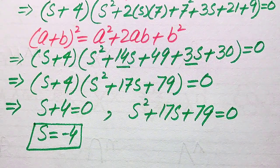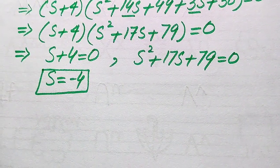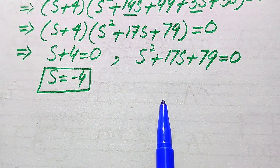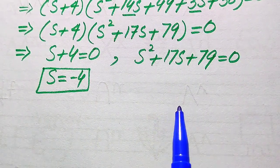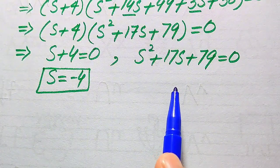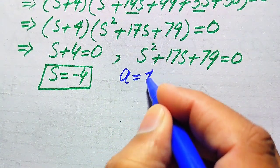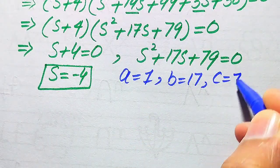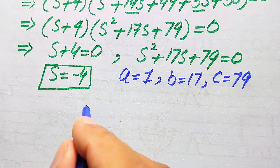To solve s² + 17s + 79 = 0, there are three methods: factorization, completing the square, or the quadratic formula. We use the quadratic formula. The coefficients of this equation are a = 1, b = 17, and c = 79.